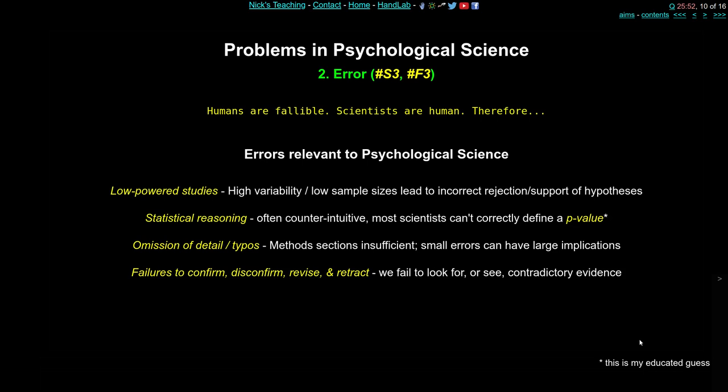A second major problem in psychology is statistics. Statistical reasoning is not easy and is often counter-intuitive. Over my teaching career I've surveyed scientists — psychologists, PhD students, masters students, and staff — in lecture theatres, asking them to define the p-value. Even in a multiple-choice format, the majority of scientists don't get this right. P-values are among the most commonly reported statistical numbers in psychology, yet most scientists are unable to correctly define what one is.